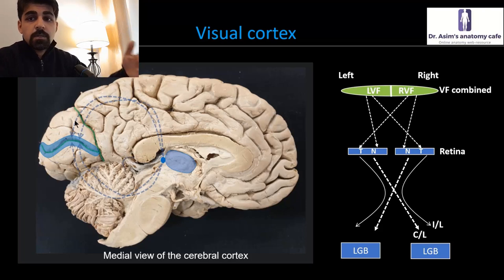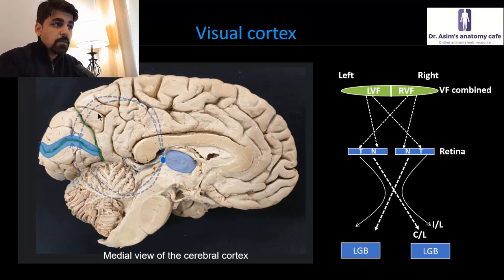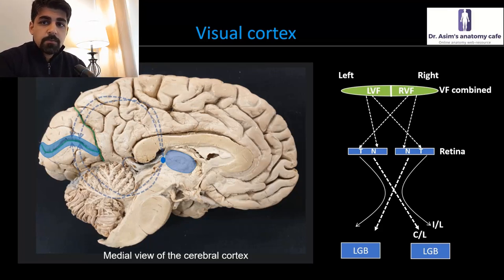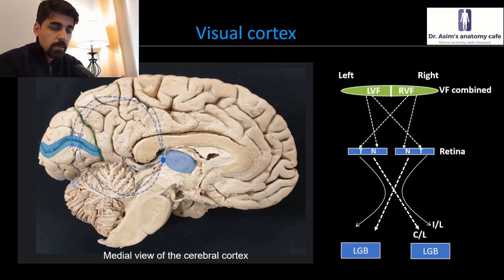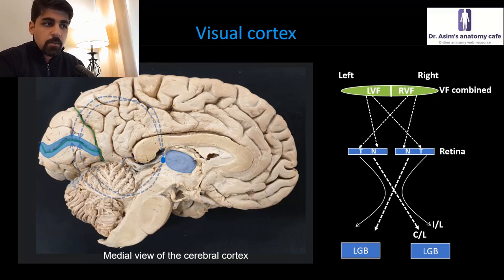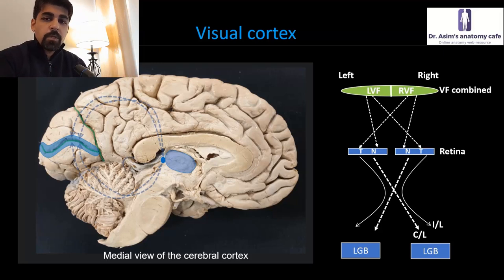From here, visual information is then given to the tertiary higher-order association areas, where the visual information is amalgamated with the sense of touch, auditory information, taste sensation, and whatever other sensory information is coming from the object we are trying to perceive in our external environment. That is a higher-order perception where our brain tries to make sense of what we are actually seeing in the outside world.